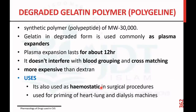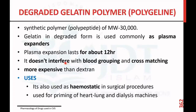Degraded gelatin polymer, also known as polygeline, is a synthetic polymer with a molecular weight of 30,000. The plasma expansion lasts for 12 hours and it does not interfere with blood grouping and cross matching. These are more expensive compared to dextran and are mainly used as a hemostatic agent in surgical procedures and for priming of heart-lung and dialysis machines.